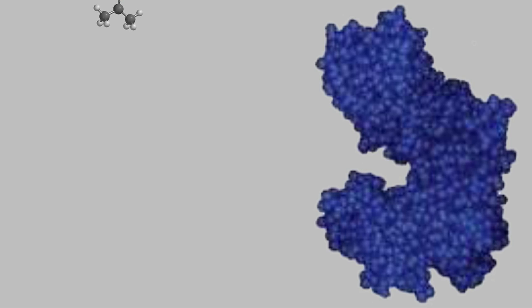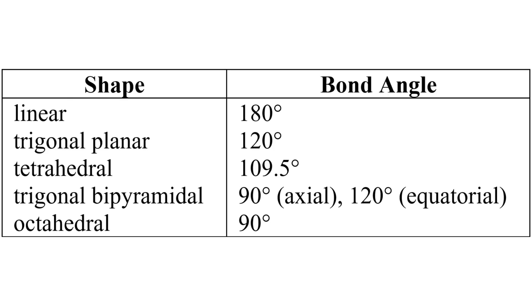So, we've learned about the shapes of molecules that have 2, 3, 4, 5, and 6 bonds on the central atom. There are also molecules with even more bonds, but those are much less common.